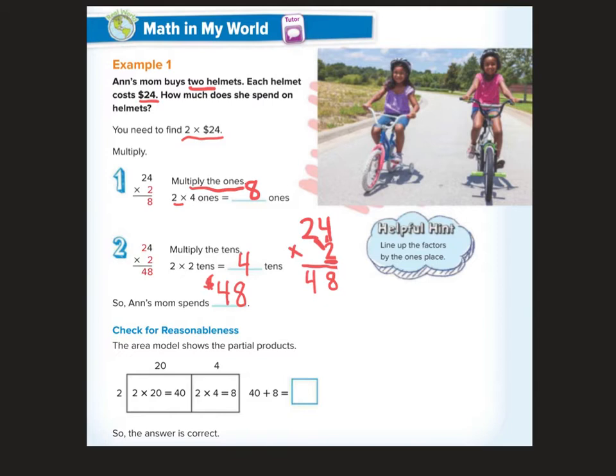Let's try it. It says check for reasonableness. We could do the area model, partial products. 2 times 20 is 40, 2 times 4 is 8. 40 plus 8 is 48. So, we matched them. The answer is correct.